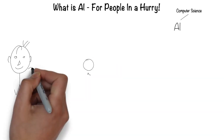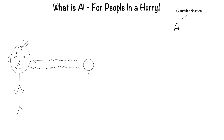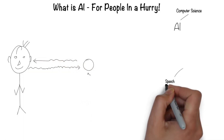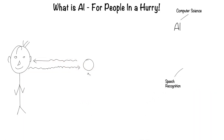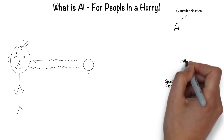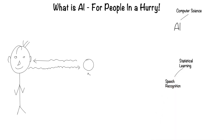Humans can speak and listen to communicate through language. This is the field of speech recognition. Much of speech recognition is statistically based — hence it's called statistical learning.